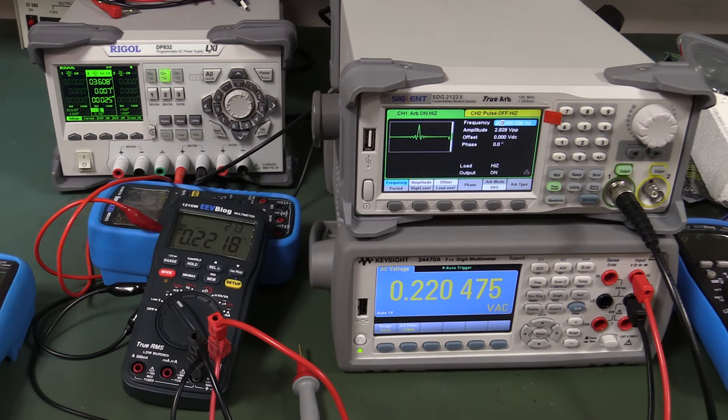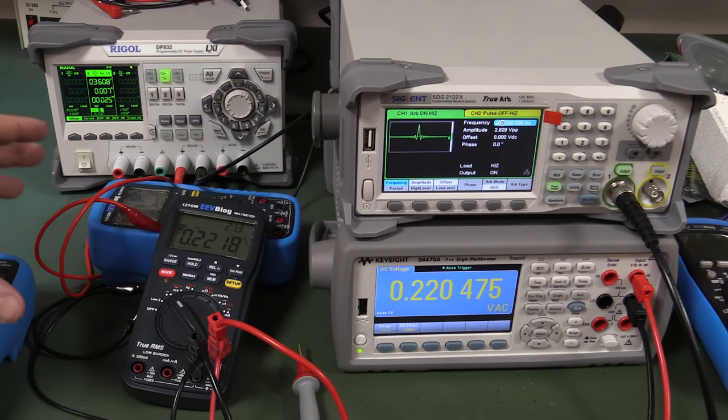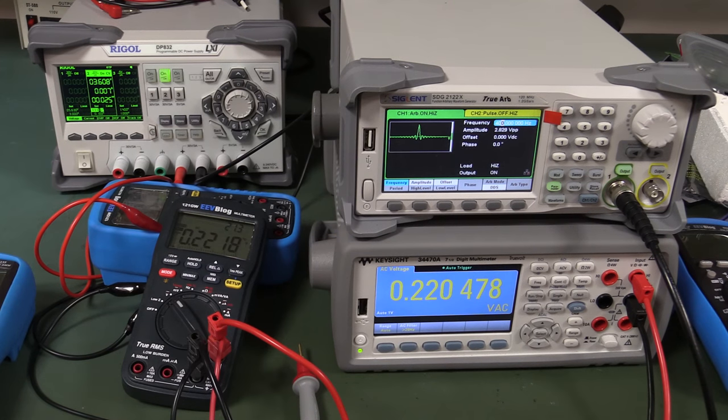But this multimeter actually uses four AA batteries to power this thing. So four AA batteries gives us a nominal battery supply voltage of six volts. When you're designing a battery-powered product, you want to actually maximize the usable capacity in that battery. So you want to have the cutoff voltage of your battery as low as possible.